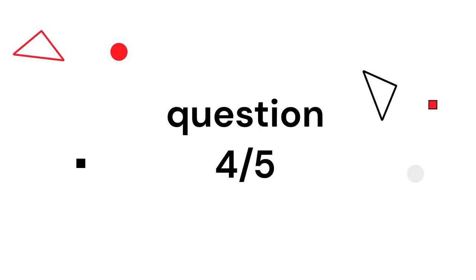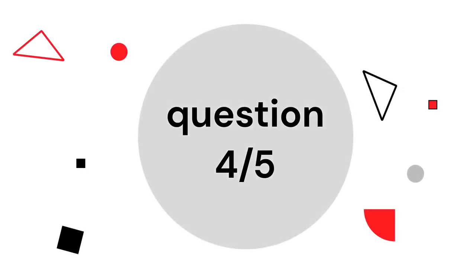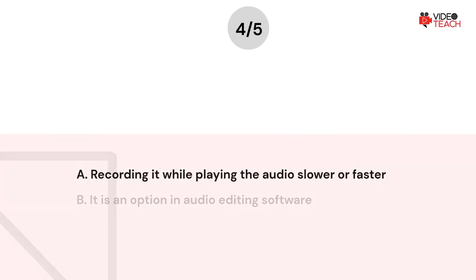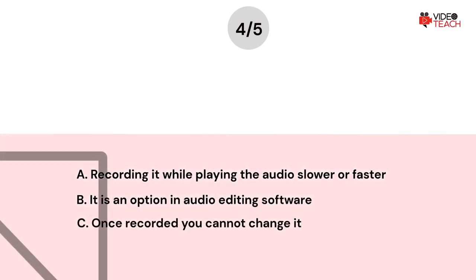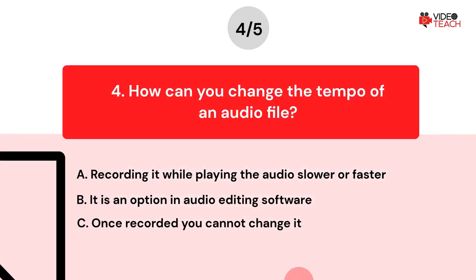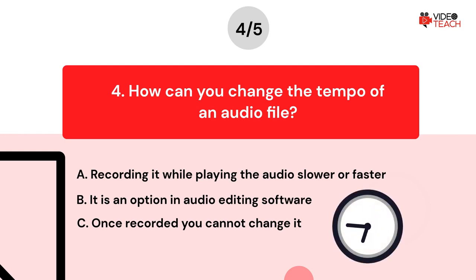Question number four. How can you change the tempo of an audio file? Option A: Recording it while playing the audio slower or faster. Option B: It is an option in audio editing software. Option C: Once recorded, you cannot change it. Now you have about 15 seconds to think about your answer.